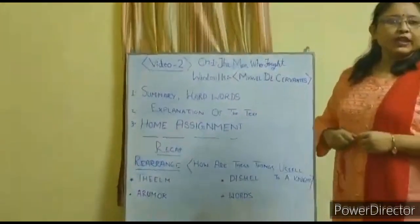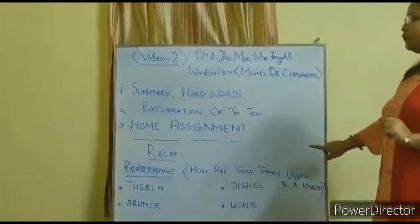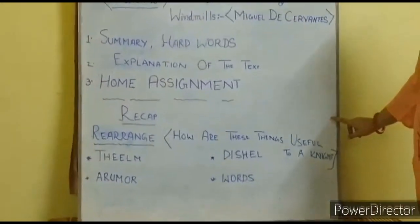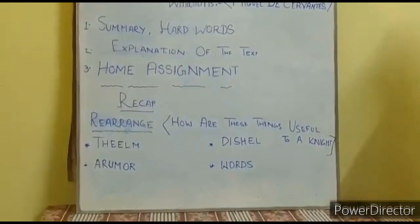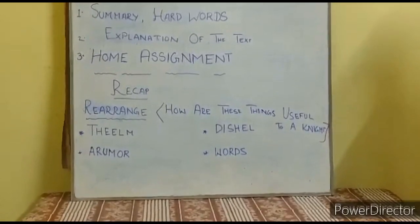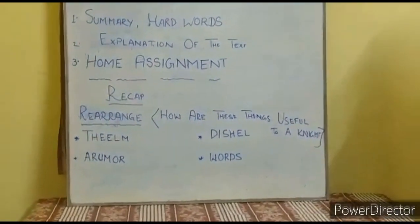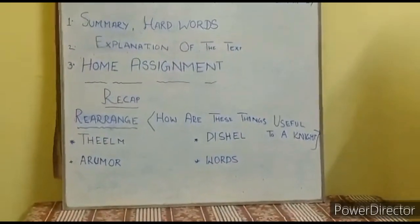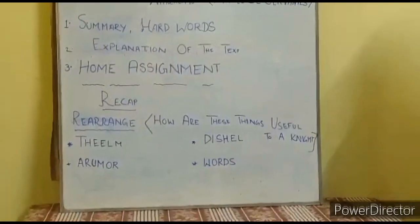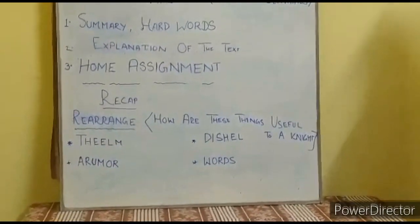Now before I go for the recapitulation, I would like to give you a small activity. Do focus here at the quote. I have given you 4 words in a jumble form. You are supposed to rearrange these 4 words. All these are things which are useful to a knight — a person who fights for their king. So please take a few seconds and try to rearrange these words.